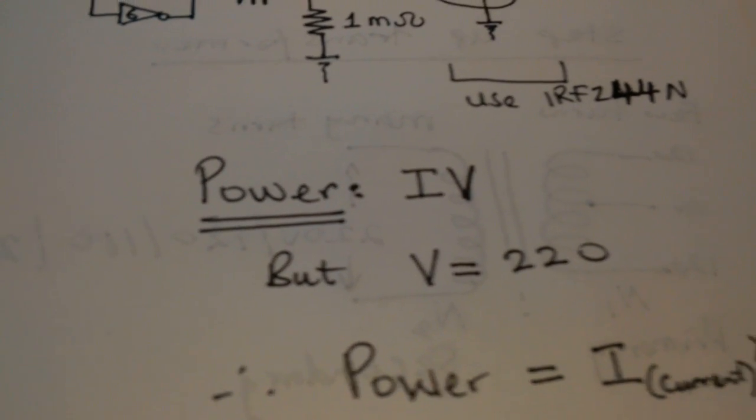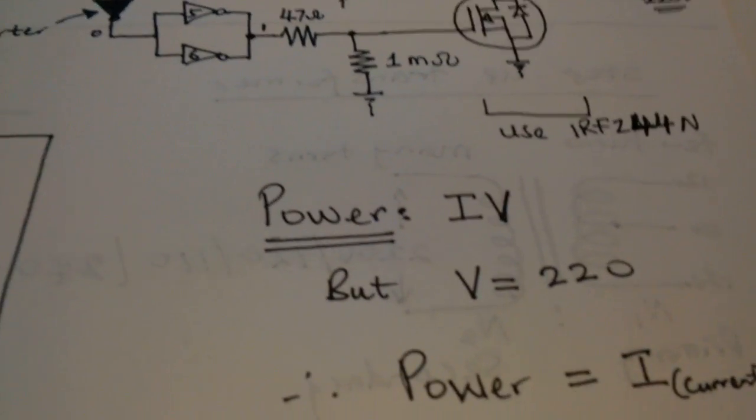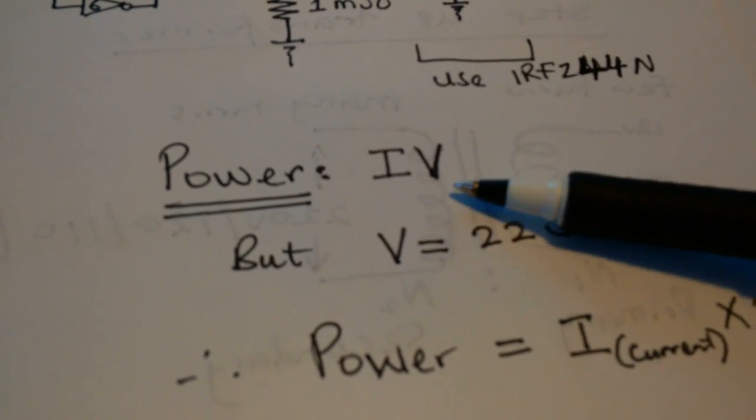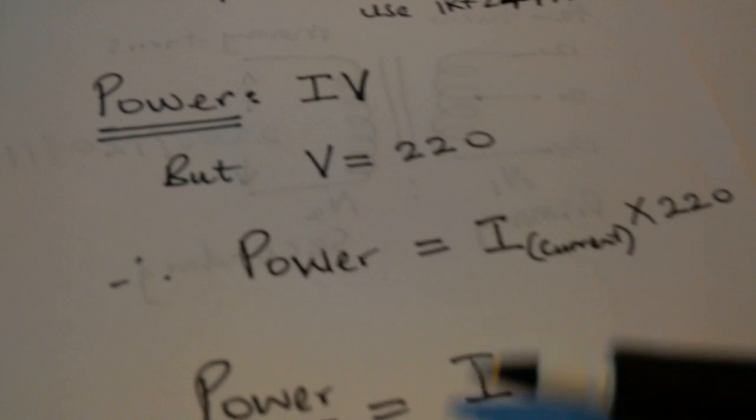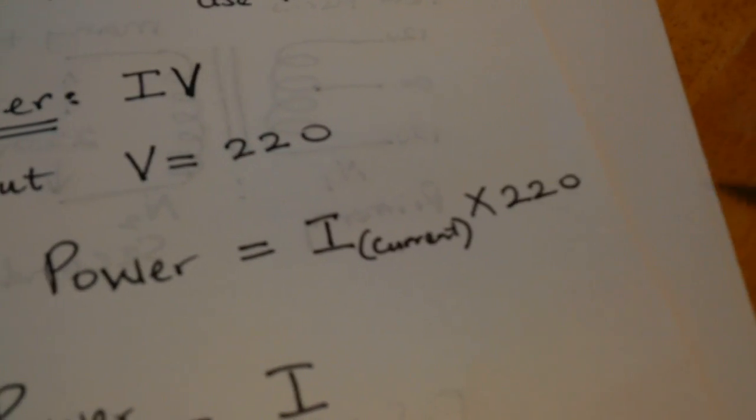So, consider efficiency of 75% when you make this design. So, the current is unknown and the voltage is known. So, V is 220. So, power is current, which is unknown times 220, of course, times efficiency.